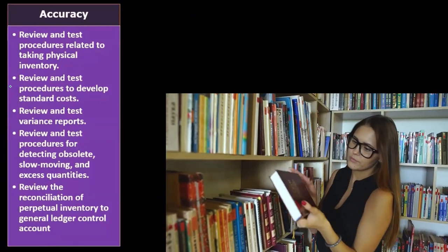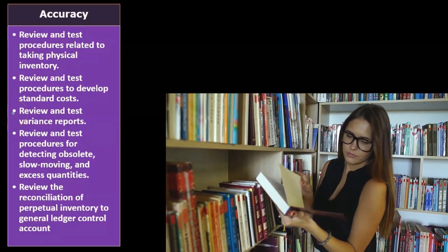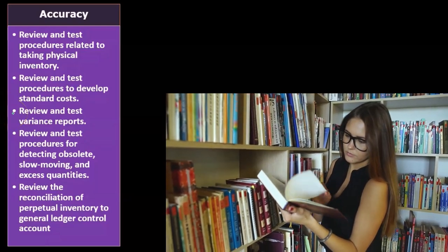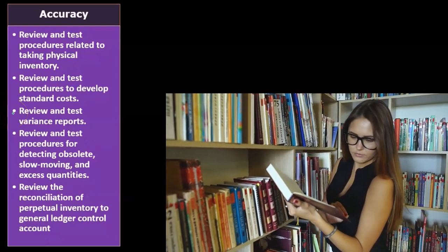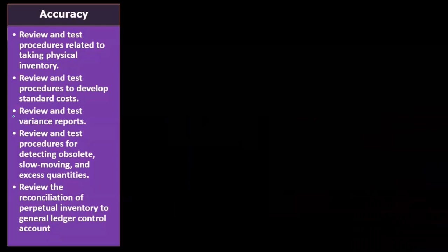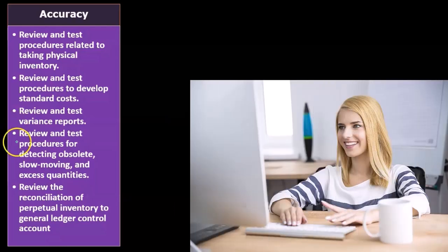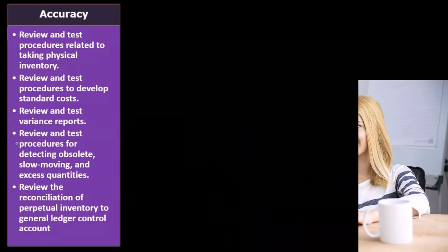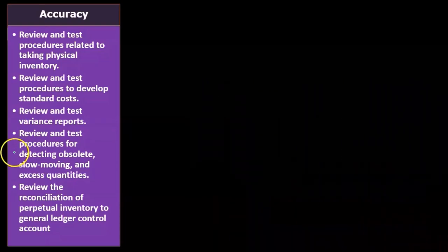Then we have the review and test procedures to develop standard costs — essentially estimated costs in a production-type process. Review and test variance reports, which show the difference between the standards and what actually happened — more relevant when we're producing inventory rather than purchasing and selling it. Review and test procedures for detecting obsolete, slow-moving, and excess quantities.